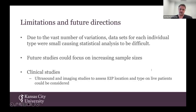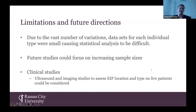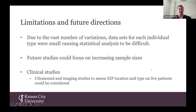There are some limitations of the study. Due to the vast number of variations, our data set for each individual type was small, which made statistical analysis difficult and was why we ended up having to combine different results. For future studies, we could focus on increasing sample sizes, and we could look at doing clinical studies using ultrasound and imaging to help assess the extensor indices location on live patients.